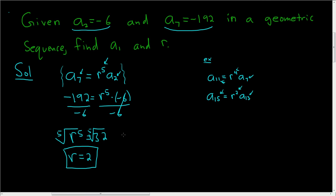Now we need to find a sub 1. We can use either a sub 2 or a sub 7. Let's use a sub 2. So a sub 2 is equal to a sub 1, and to get from a sub 1 to a sub 2, we just need one copy of r. a sub 2 is negative 6, r was 2, and a sub 1 we don't know.